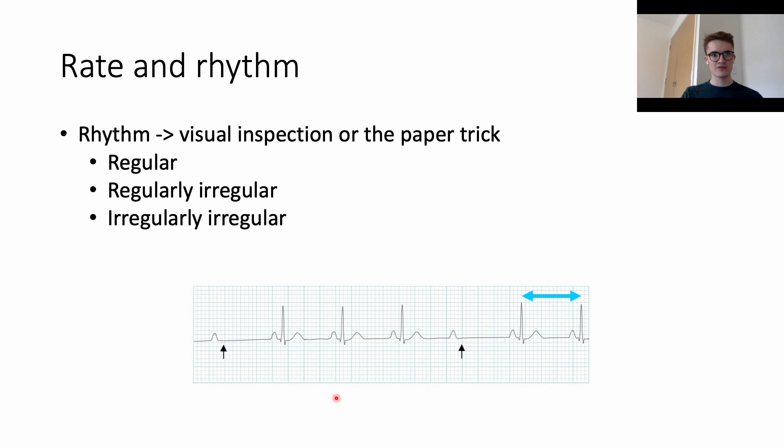So while it's an irregular rhythm, it has some regularity to it. It has these stretches of two or three QRS complexes where the rhythm is maintained at a regular rate, and then it drops off and gets a regular rate again. We would call this a regularly irregular rhythm.